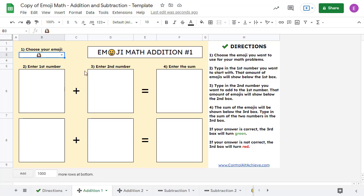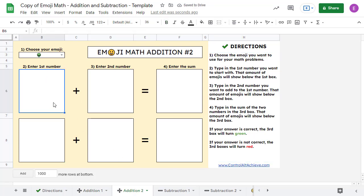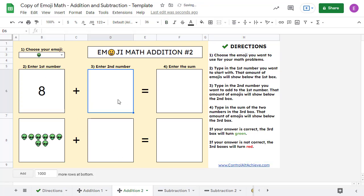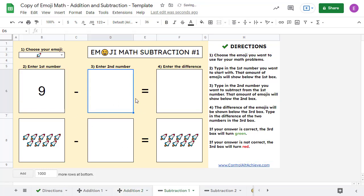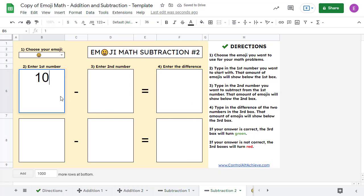Next, the students will type in the two numbers that they want to add or subtract in the first and second boxes. For example, we could do 5 plus 6 or 8 plus 2 or 9 minus 4 or 10 minus 3.